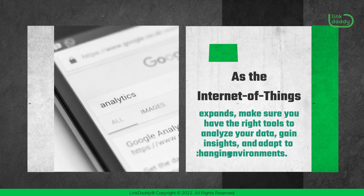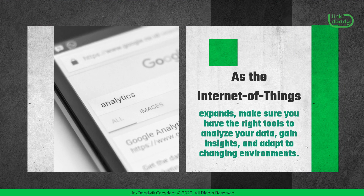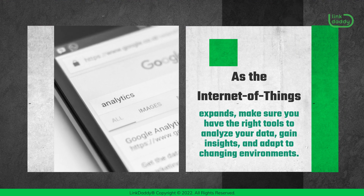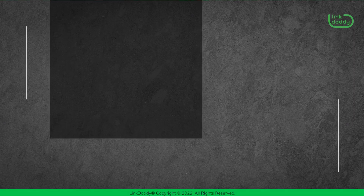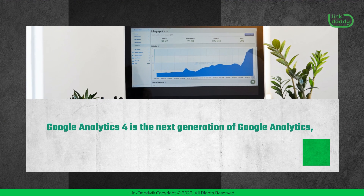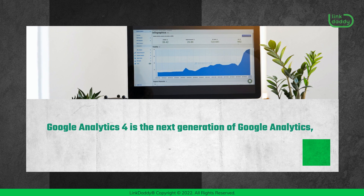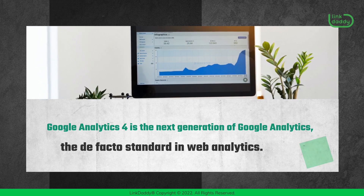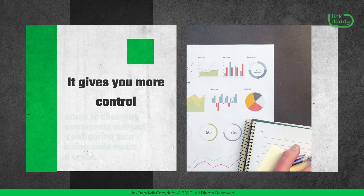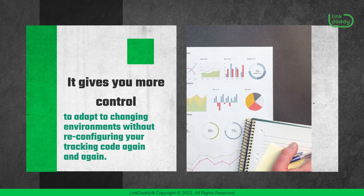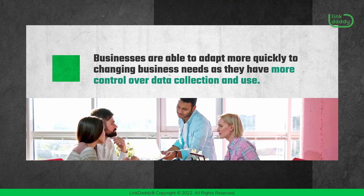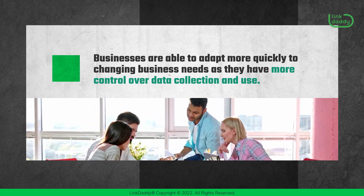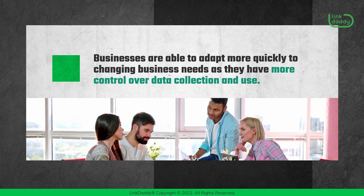As the Internet of Things expands, make sure you have the right tools to analyze your data, gain insights, and adapt to changing environments. Google Analytics 4 is the next generation of Google Analytics, the de facto standard in web analytics. It gives you more control to adapt to changing environments without reconfiguring your tracking code again and again. Businesses are able to adapt more quickly to changing business needs as they have more control over data collection and use.